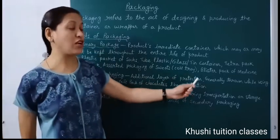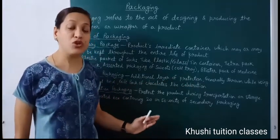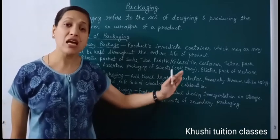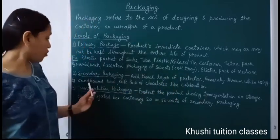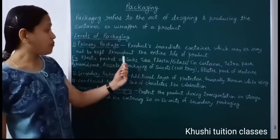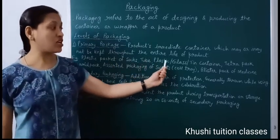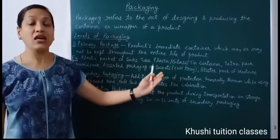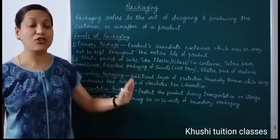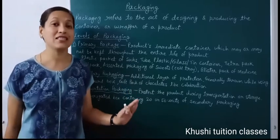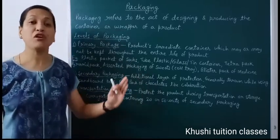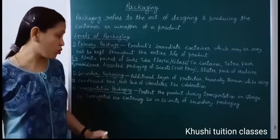Secondary packaging is generally thrown away while using the product — जब हम product का use करना शुरू करते हैं, तो इस secondary pack को generally फेंक देते हैं। For example, cardboard box — जैसे एक tube या glass container के साथ एक cardboard box भी होता है जो second layer होता है, secondary packaging होती है। इसके ऊपर भी पूरी information और labeling होती है।